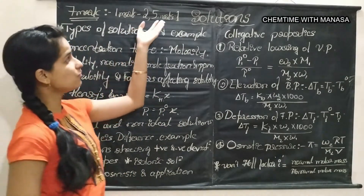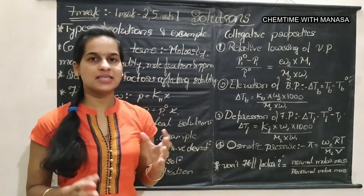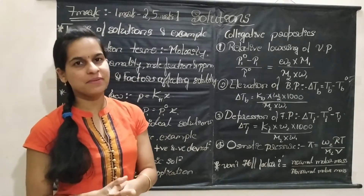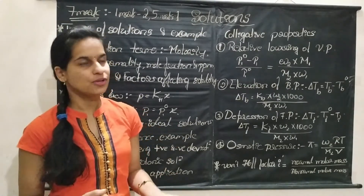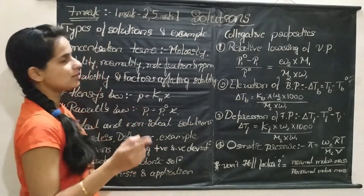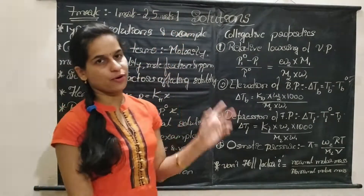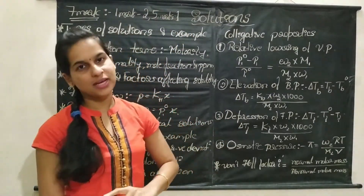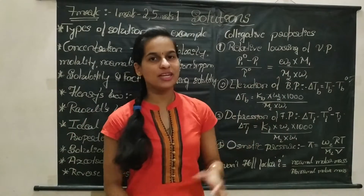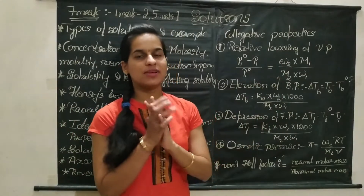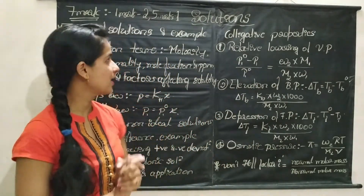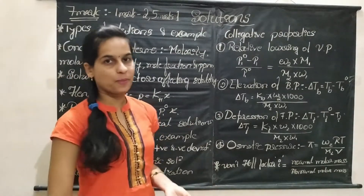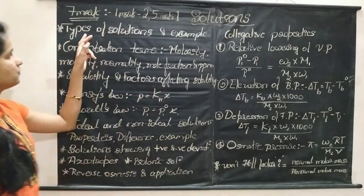In case of the 5-mark question, it is either divided as 3 plus 2 or sometimes 4 plus 1. So, 2 one-mark questions and 1 five-mark question. In case of the 5-mark question, one numerical problem based on colligative properties will definitely be asked. Now let's look at the important topics from this chapter.